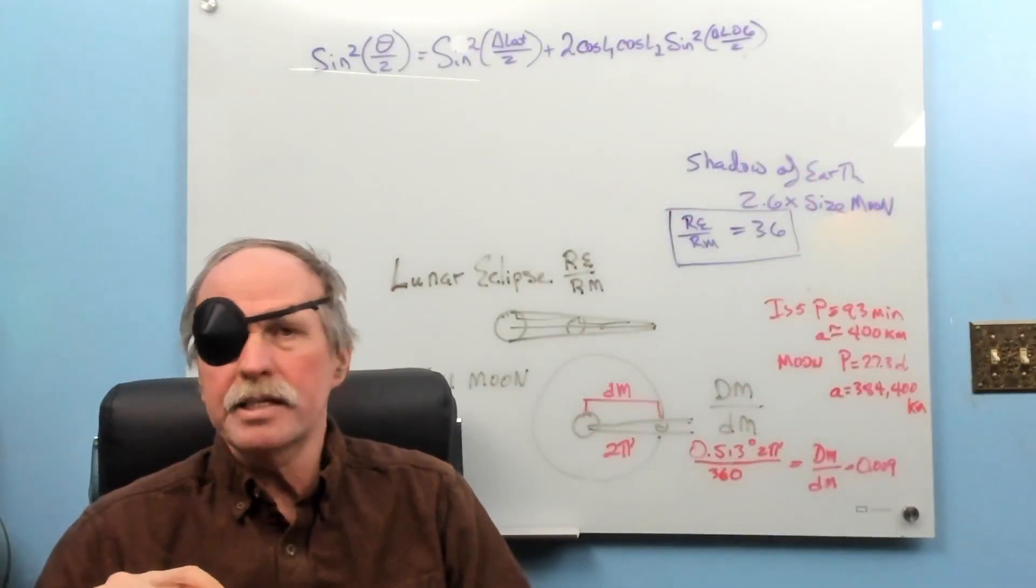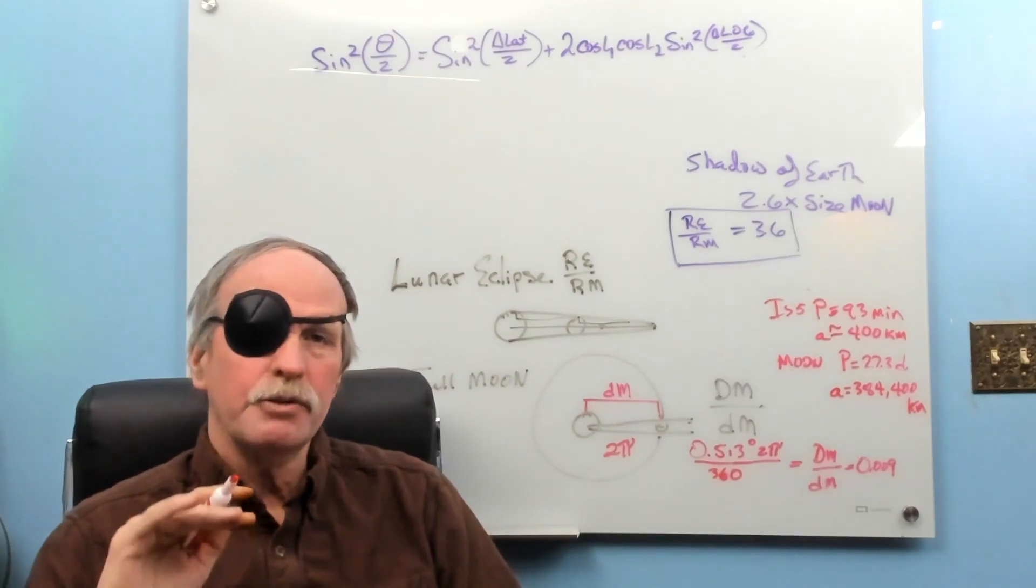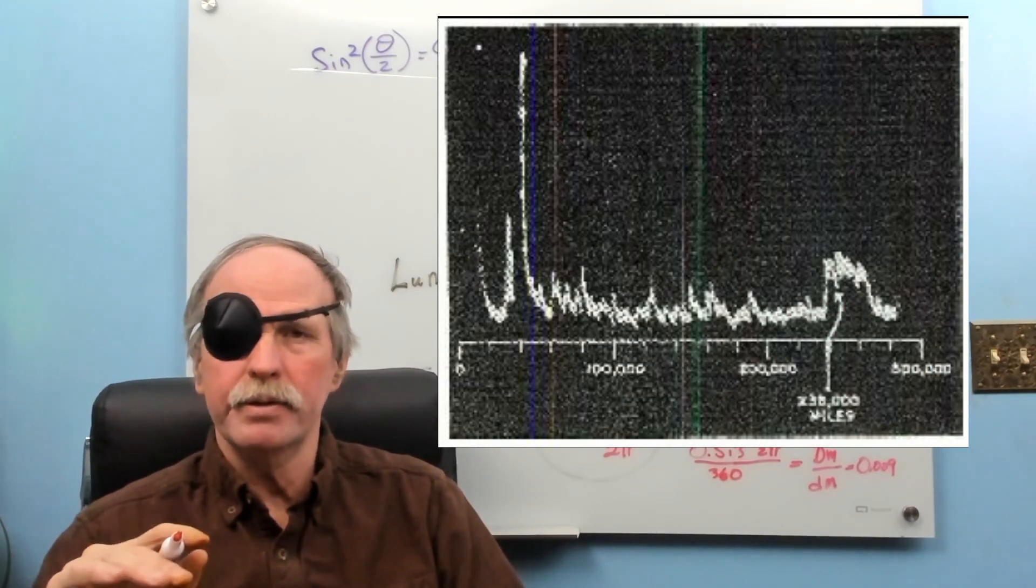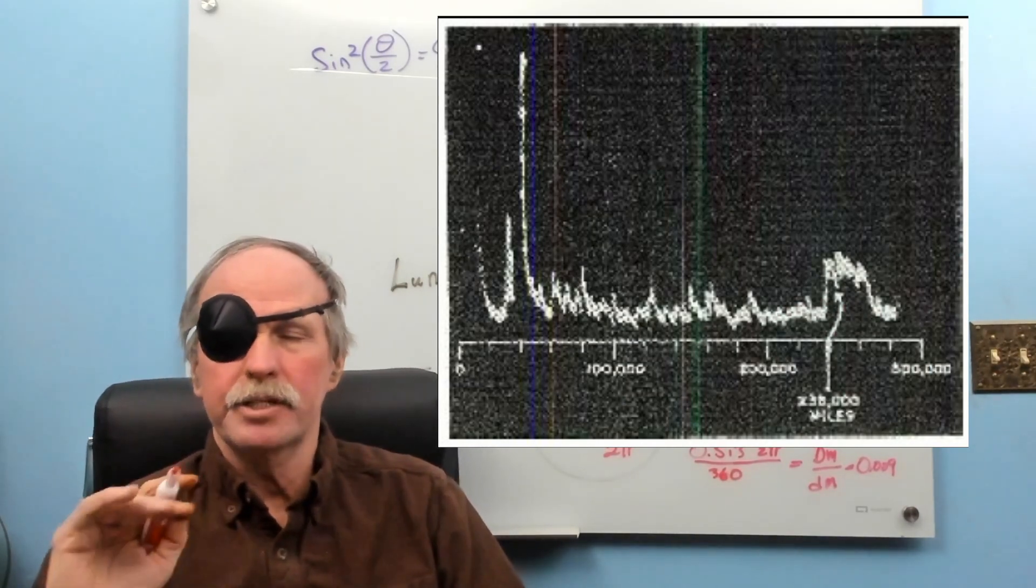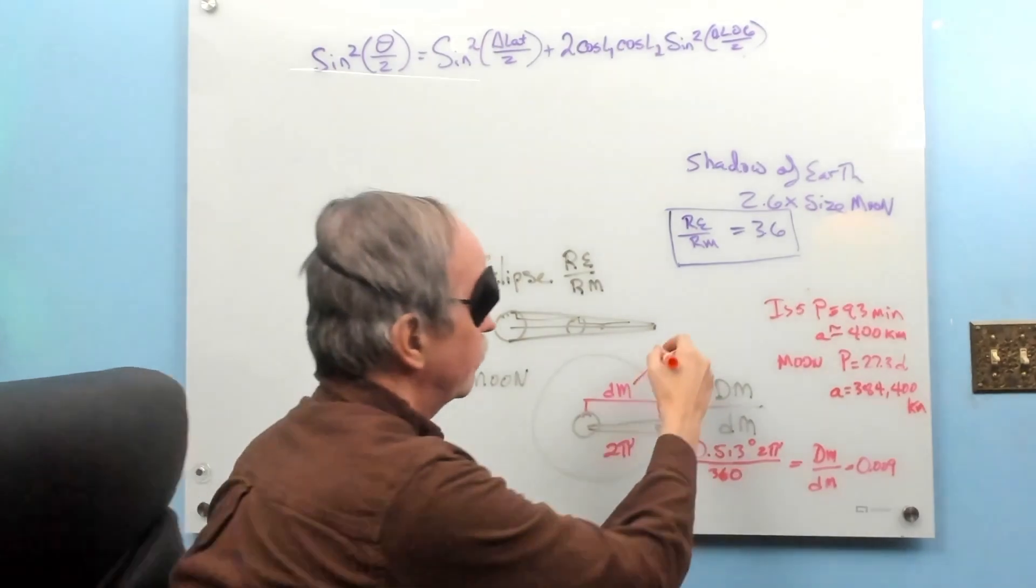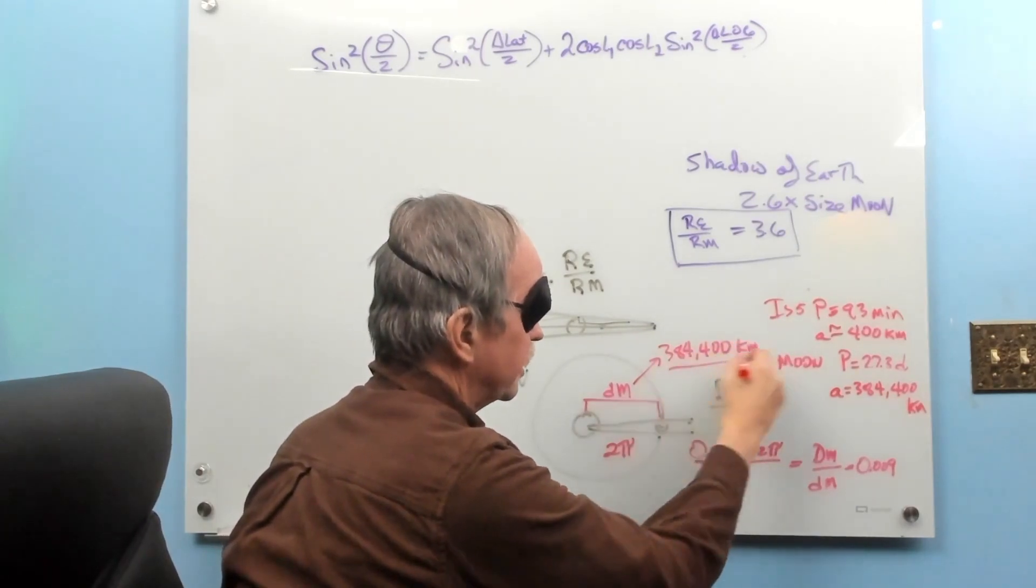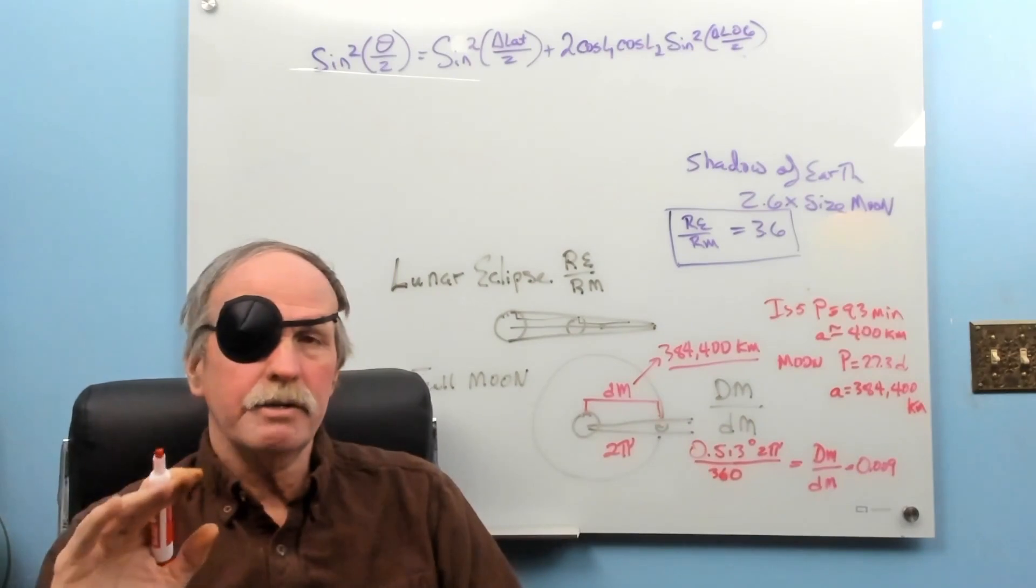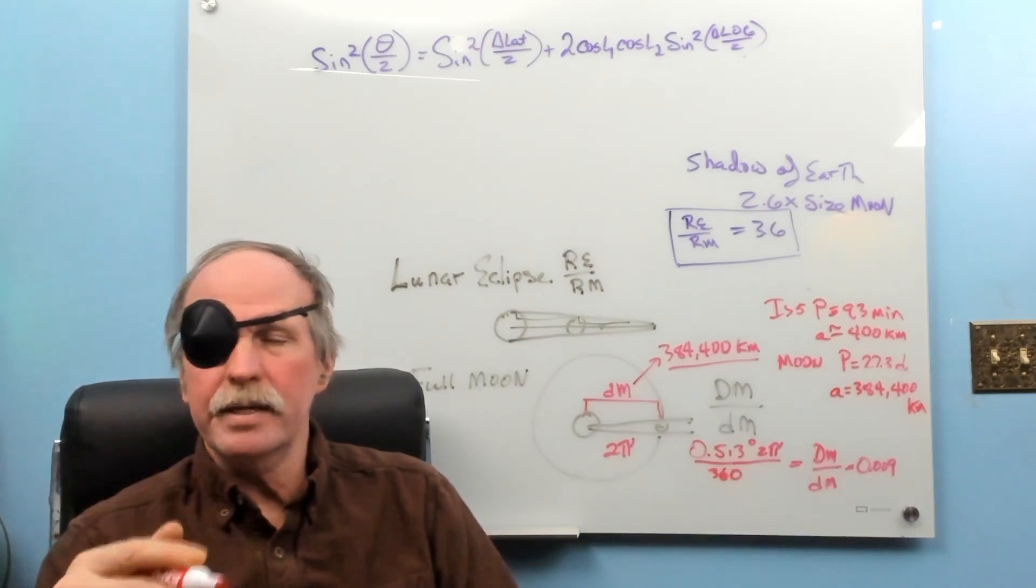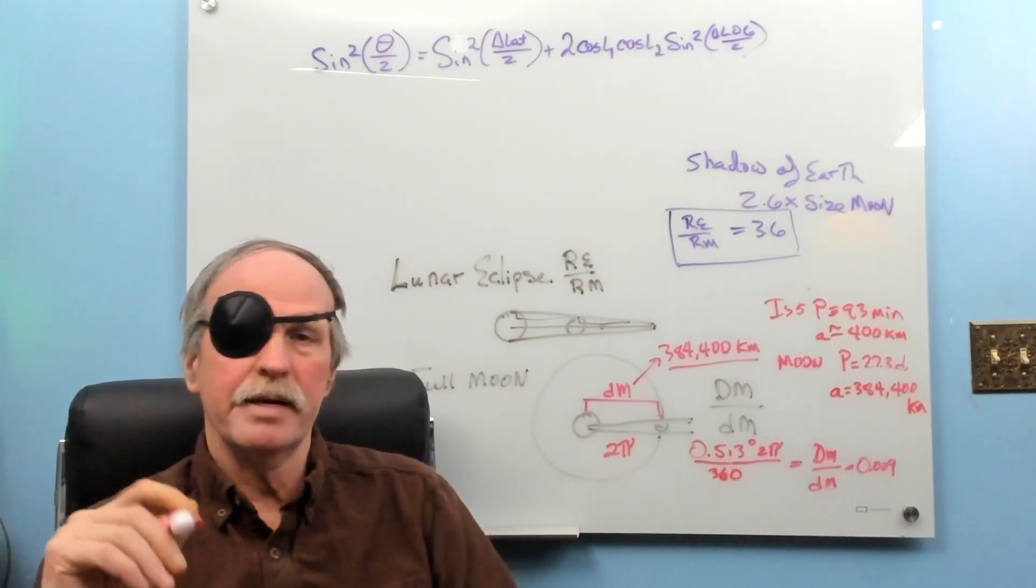Now, in 1947, we had something called Project Diana, which was the first attempt by man to bounce radar waves off of the Moon. And they were actually able to get an echo return from the Moon. And that return indicated the Moon was 238,000 miles away. Converting that to more modern measurements, we have 384,400 kilometers as the distance from the Earth to the Moon. Now, we don't just rely on Project Diana for this. We've bounced other radar waves off of the Moon. We've bounced lasers off of the lunar surface and we've bounced lasers off of the laser reflectors left by the Apollo astronauts.